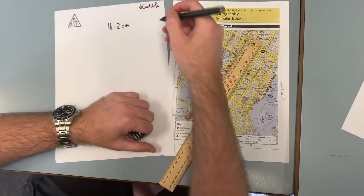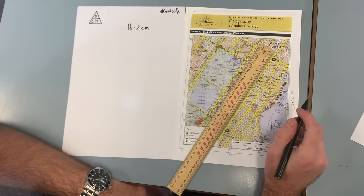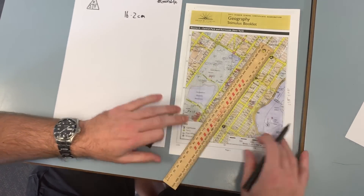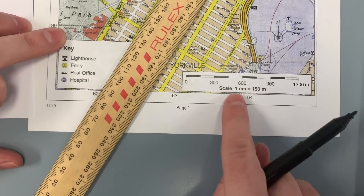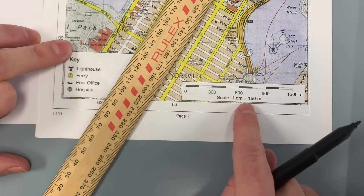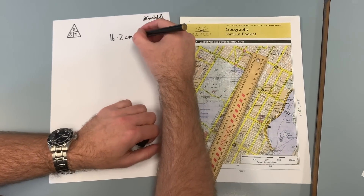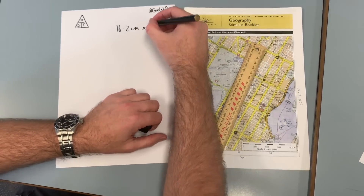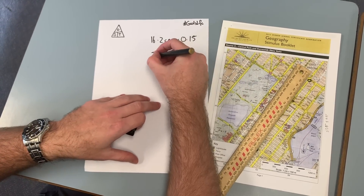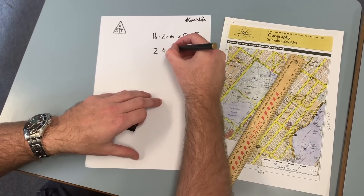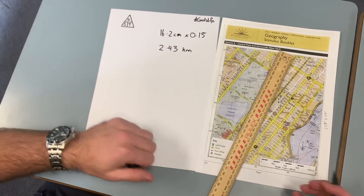Now, 16.2 centimetres — we need to use the scale to figure out how far that actually is. Our scale, as you can see on the bottom, is 1 centimetre equals 150 metres. Another way of saying that is 0.15 kilometres per centimetre. So if we times 16.2 by 0.15, we get an answer of 2.43 kilometres. So that's our distance — pretty simple.